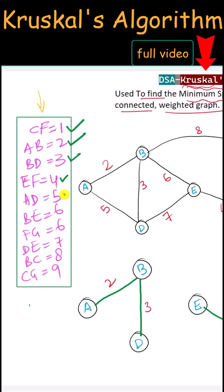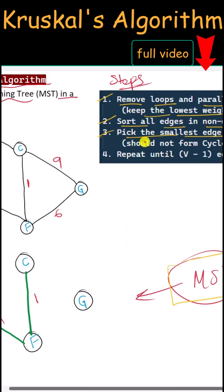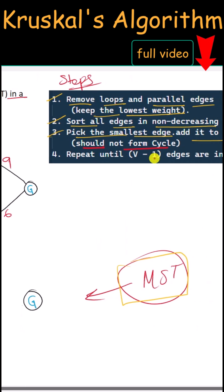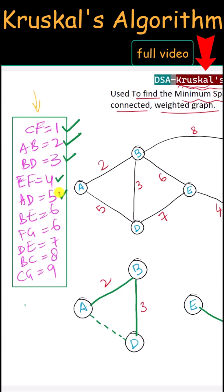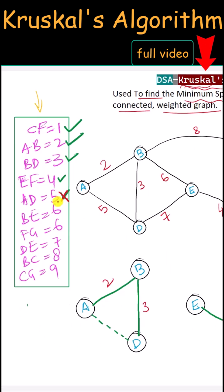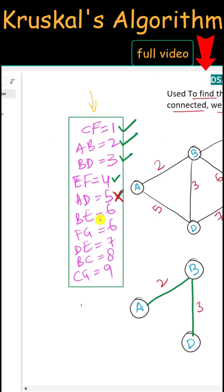Next we have the edge AD. If we include this edge in our spanning tree, it would create a cycle. As we know, there should not be any cycle in the minimum spanning tree, so we cannot include edge AD.